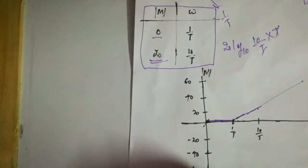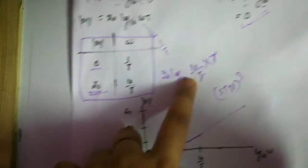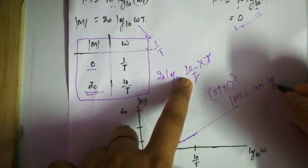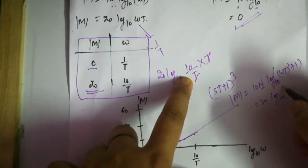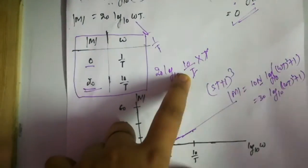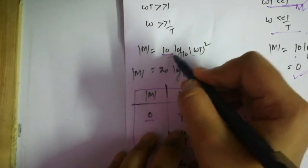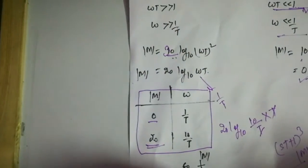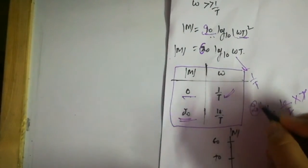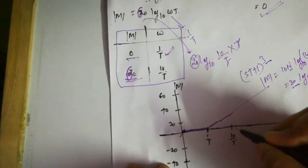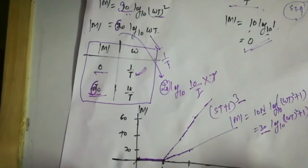Now if we have (sT + 1)³, what will happen? The general equation becomes: magnitude = 10n·log₁₀((ωT)² + 1). For n = 3, when ωT >> 1, magnitude = 30·log₁₀((ωT)²) = 60·log₁₀(ωT). So at ω = 1/T, magnitude is 0 dB, and at ω = 10/T, magnitude becomes 60 dB — giving a +60 dB per decade slope.